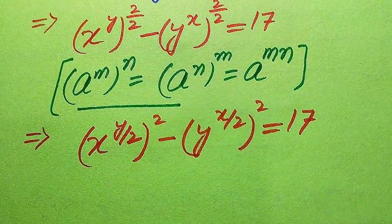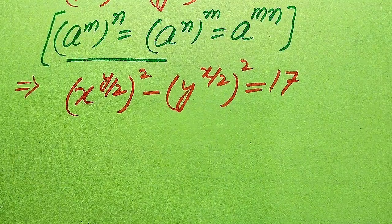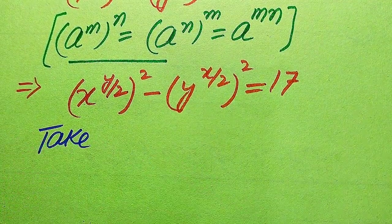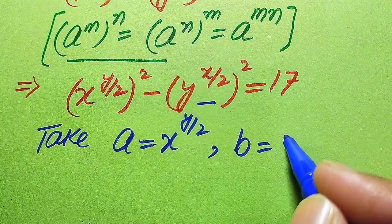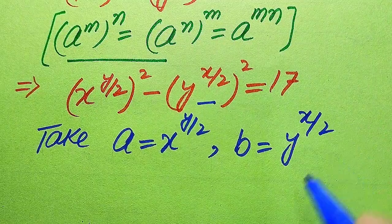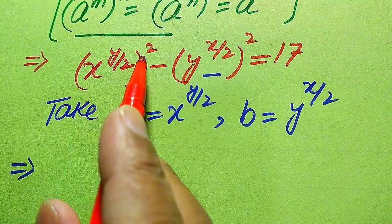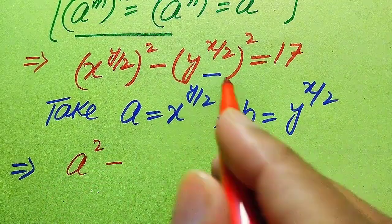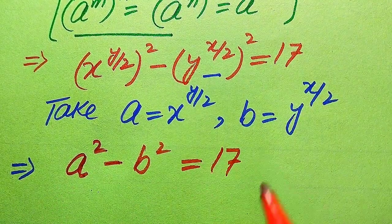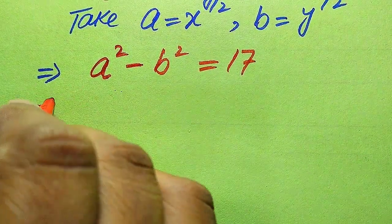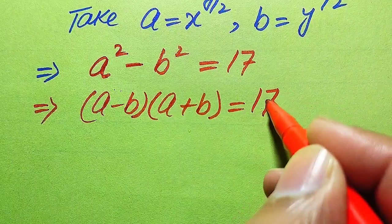For further simplification, we substitute new variables. Let a equal x to the power of y over 2, and let b equal y to the power of x over 2. Substituting into the equation gives us a squared minus b squared equals 17. We apply the well-known algebraic identity: a squared minus b squared equals a minus b times a plus b, so we have (a minus b)(a plus b) equals 17.